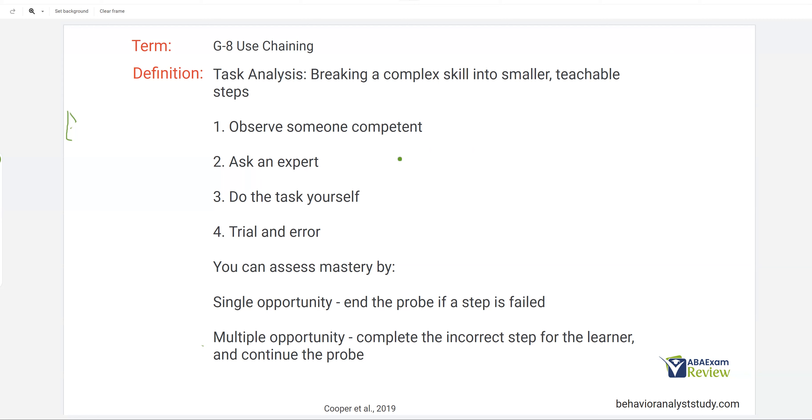Second way, ask an expert. An expert can obviously tell you a lot about the skill and the steps involved. Third, you can do the task yourself and analyze your steps, assuming you can actually do the skill yourself. And then four, trial and error. Just work through it, work through the skill until you get the steps right. Remember, all these steps should be very individualized per learner.